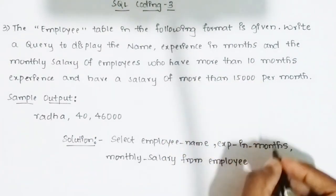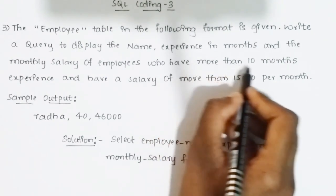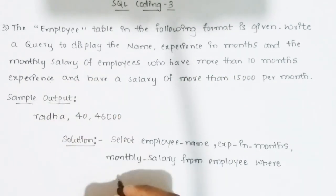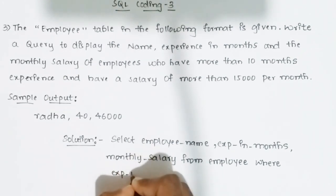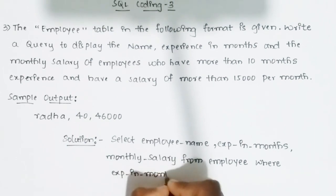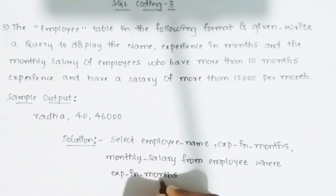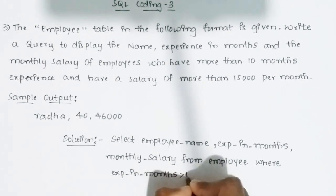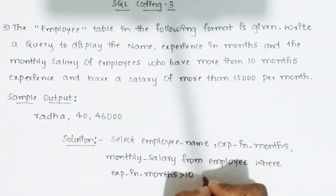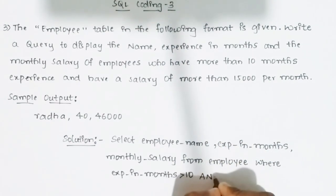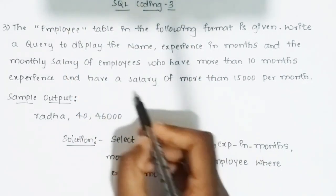Then use the WHERE clause to apply conditions. The first condition is for employees who have more than 10 months of experience, so write: WHERE experience_in_months > 10. The second condition is that the salary should be more than 15,000 per month, so add AND.